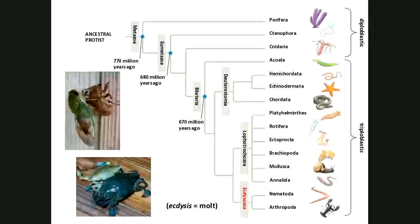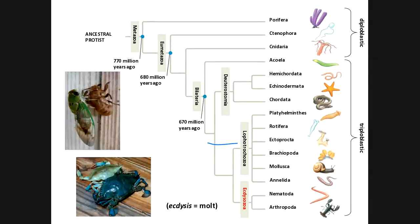That's the Lophotrochozoa group. Now we're moving on to a small group — the nematodes — and then a much bigger group we'll spend the rest of lecture on: the arthropods, including insects and crustaceans. The nematodes, the roundworms, are what we're going to dissect in Monday's lab. To remind you about the Ecdysozoa and their molting: ecdysis means to molt. The blue crab in the picture is molting — it sheds its exoskeleton because as these organisms grow, their exoskeleton does not.